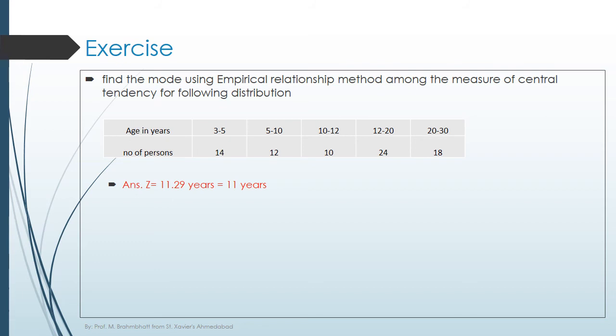I have given a self-test question. Find the mode using empirical relationship method among the measure of central tendency for the following distribution, where the age in years and number of persons are given.